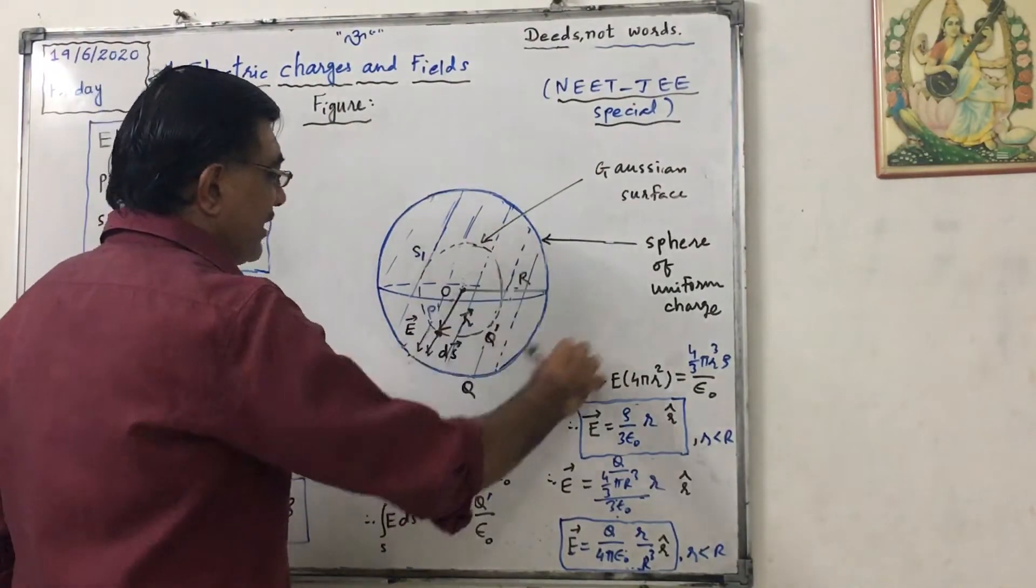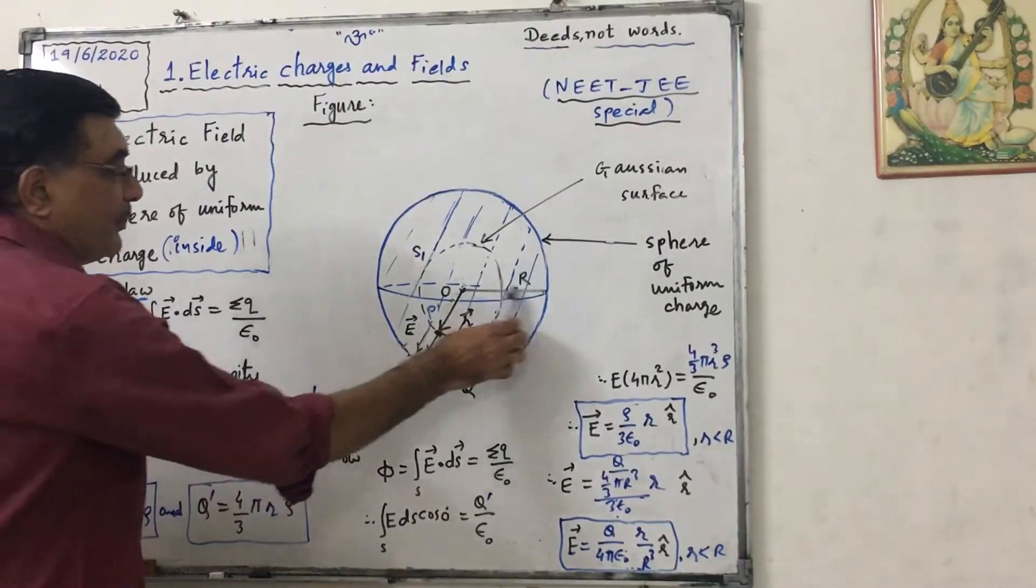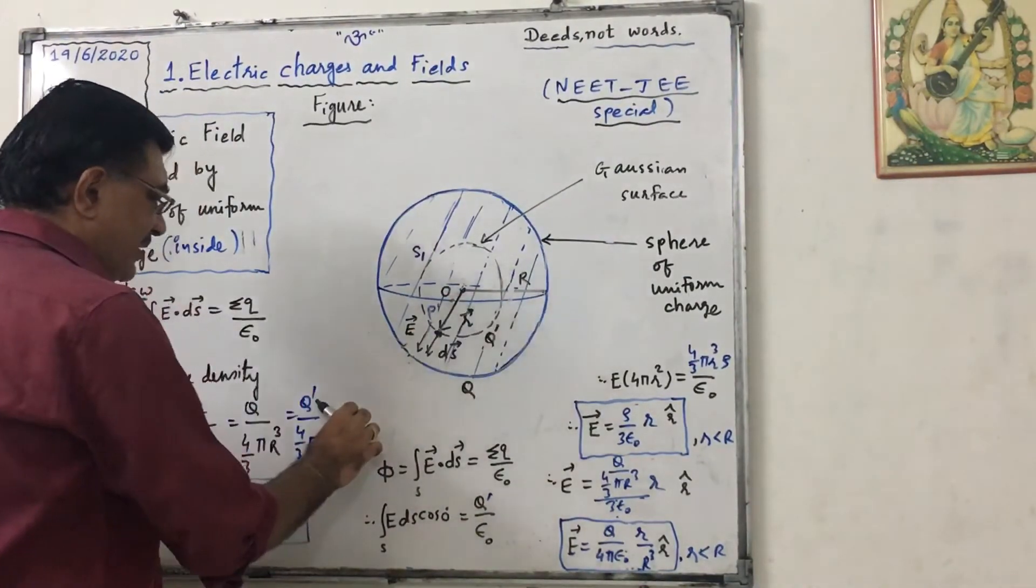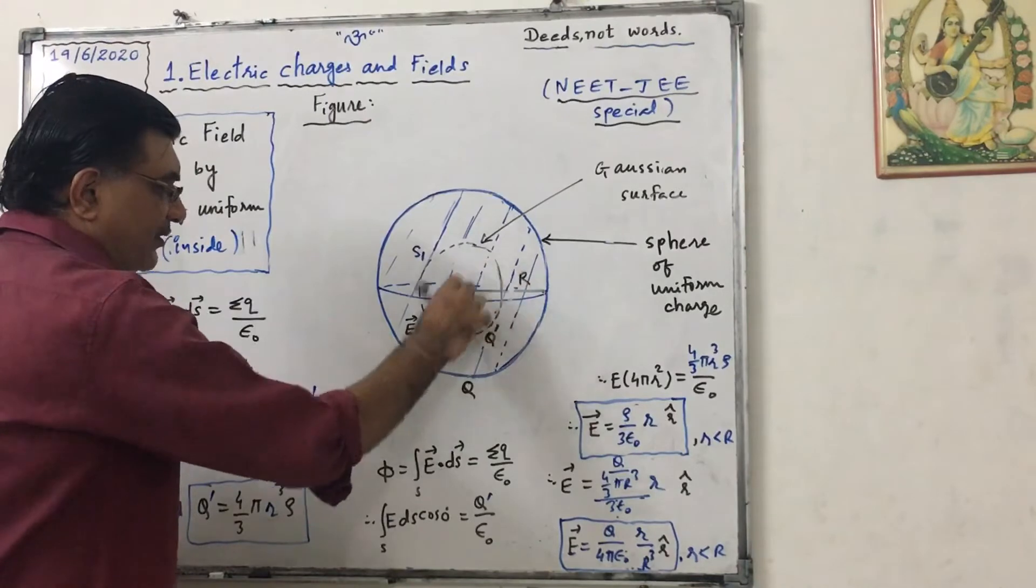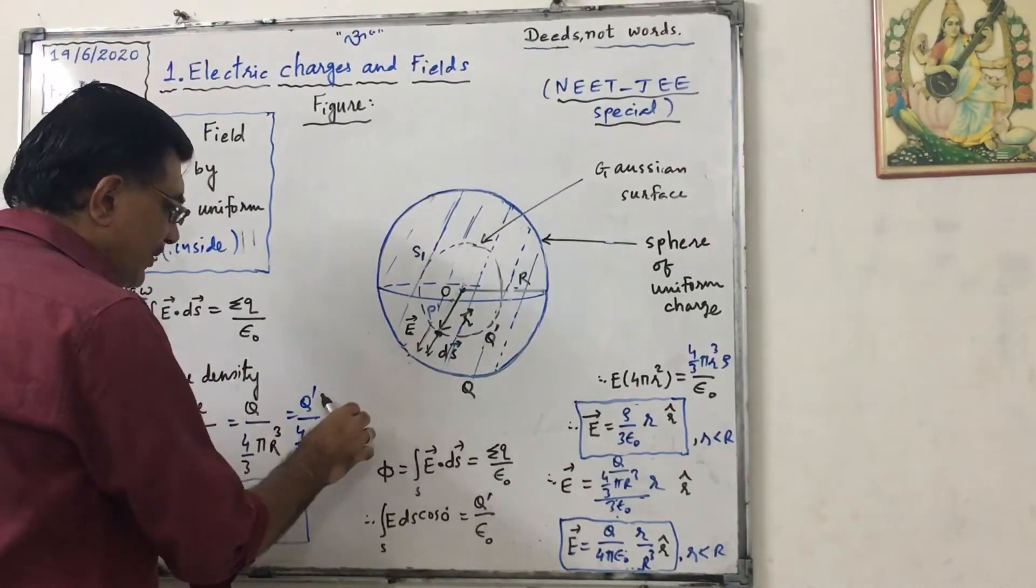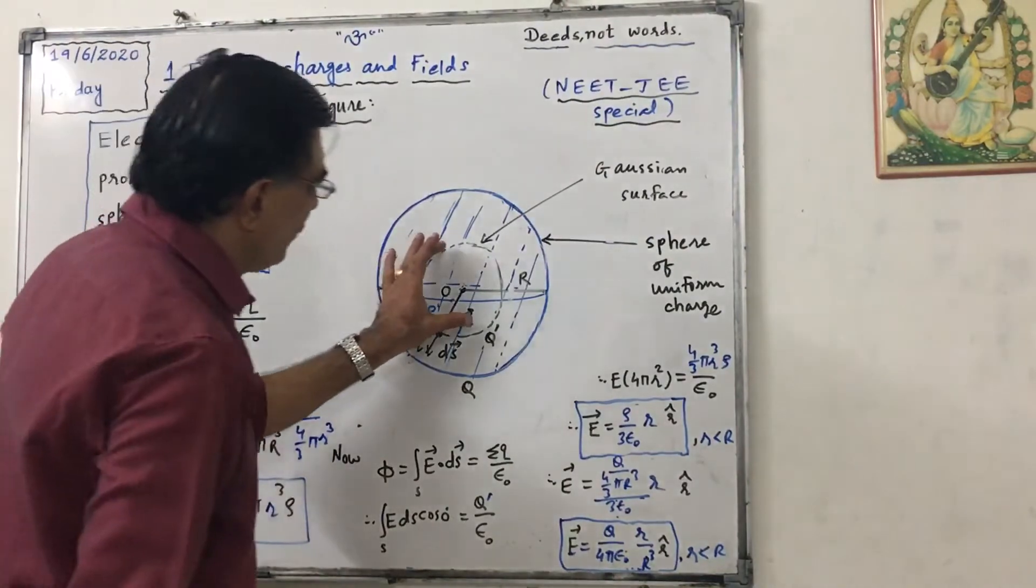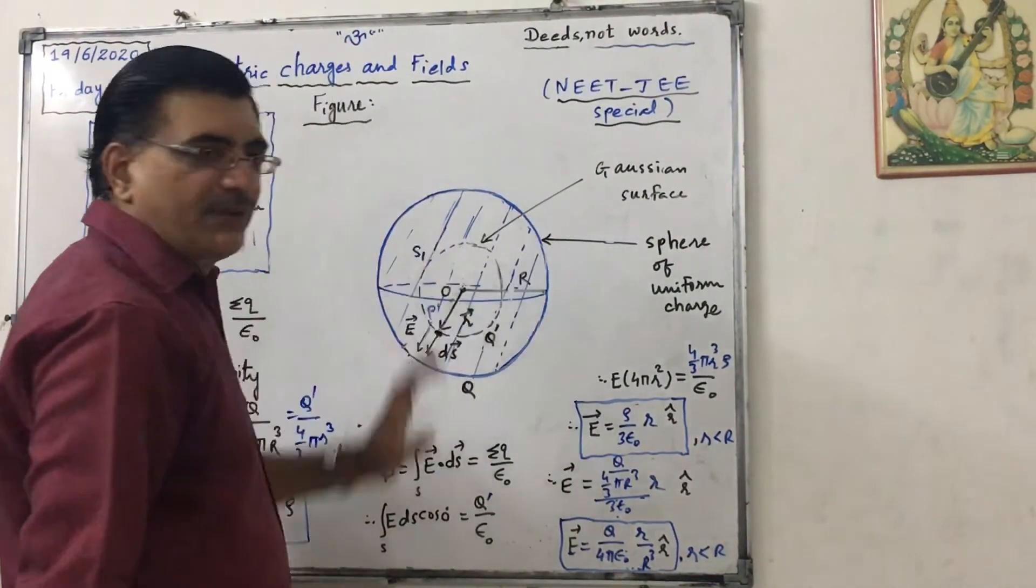So if I consider total charge capital Q, then volume will be 4 upon 3 pi R cube. And if I consider small q dash, small Gaussian surface having charge q dash, so q dash upon 4 upon 3 pi r cube, because then we have to consider volume of this sphere.